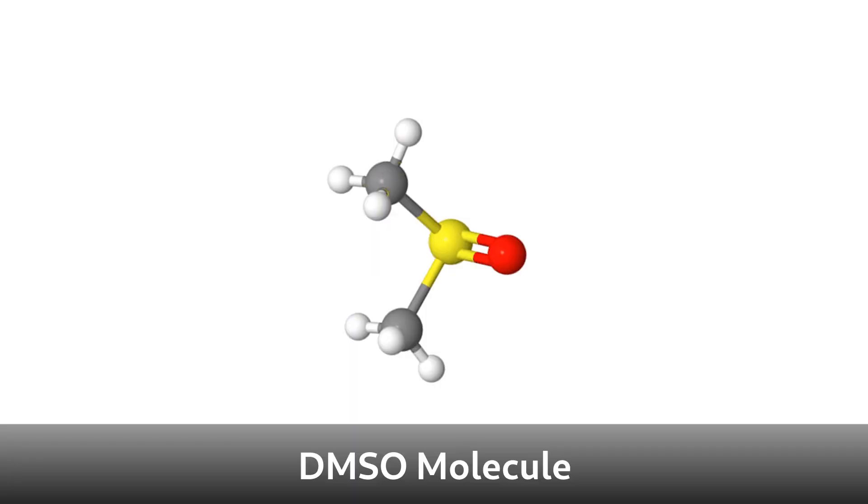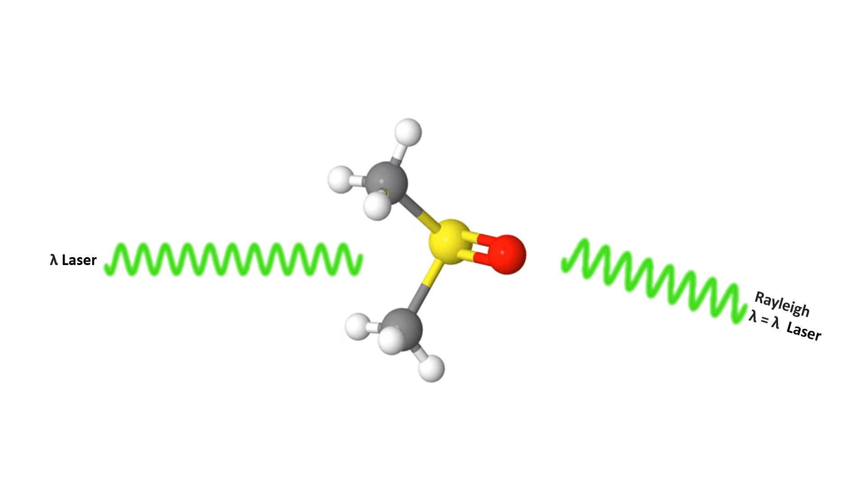Rayleigh scattering for example is an elastic scattering process where light is scattered off in all directions off of air molecules. No energy is lost and therefore the scattered light has the same energy as the incoming light.